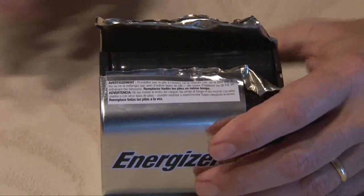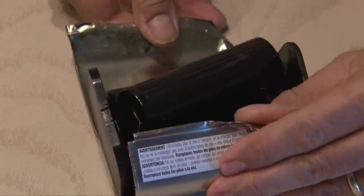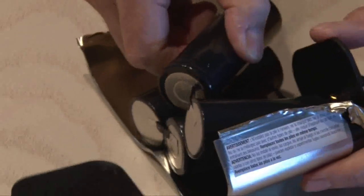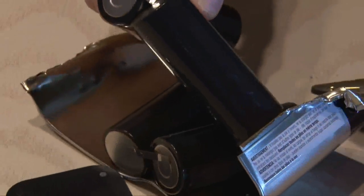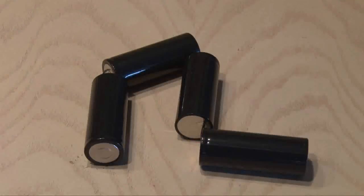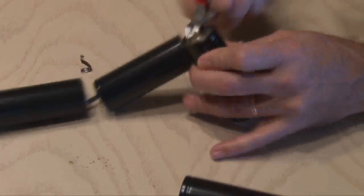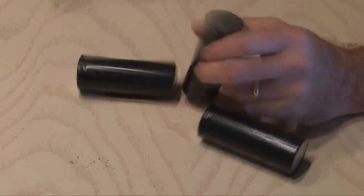After the seam is split open, you're going to find inside four big black batteries. Now, what are these things? Well, these are referred to as F-cell batteries, and they're joined together with these little tabs that you can easily cut off.